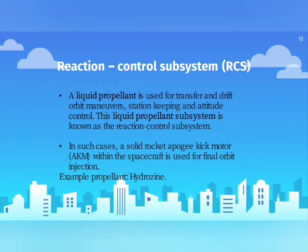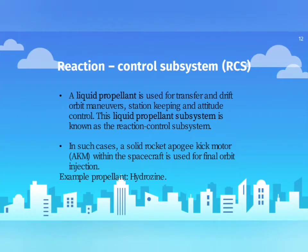The liquid propellant subsystem is known as the reaction control subsystem and it is mainly used for transfer and drift orbit maneuvers. A transfer orbit is an intermediate elliptical orbit used to move a satellite from one orbit to another. A drift orbit is a near-geosynchronous orbit. The liquid propellant subsystem is also used for station keeping and attitude control.